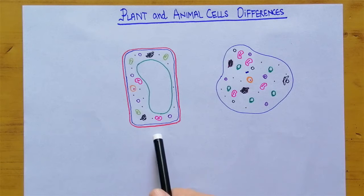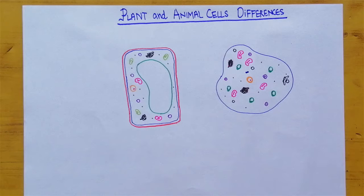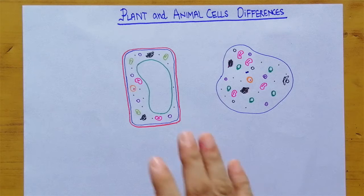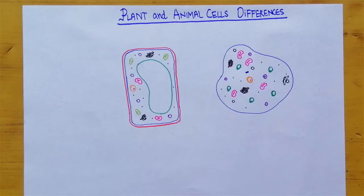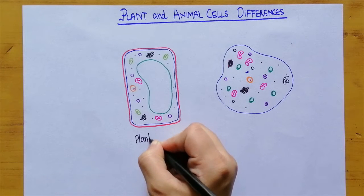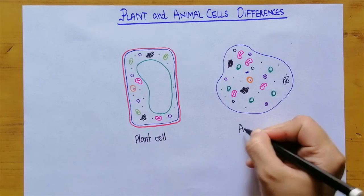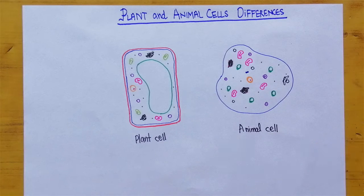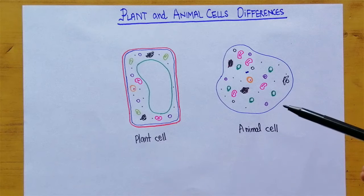Can you distinguish which type of cell is which after looking at these two? After the completion of this topic you will definitely be able to identify which type of cell is which. Here I have drawn two types of cells for your convenience — I'm going to label this one as plant cell and this one as animal cell.